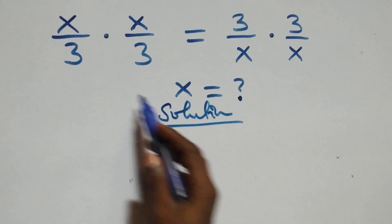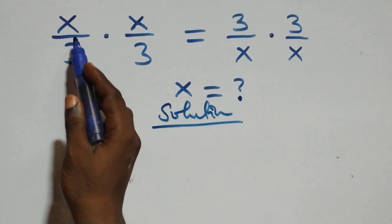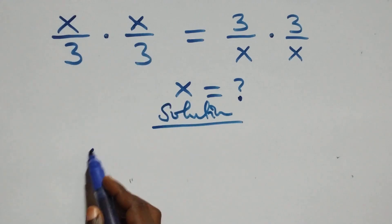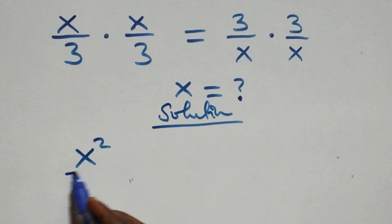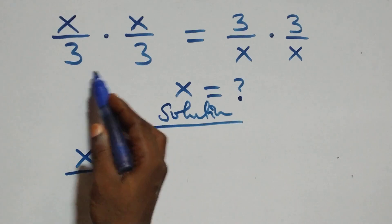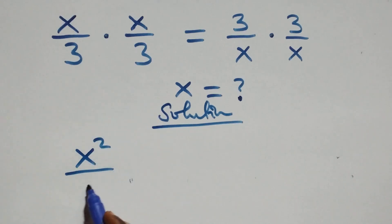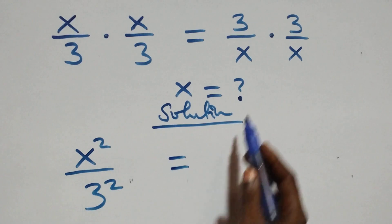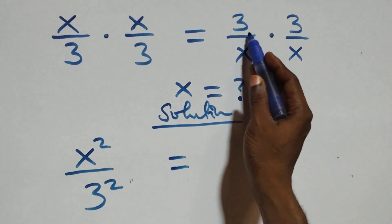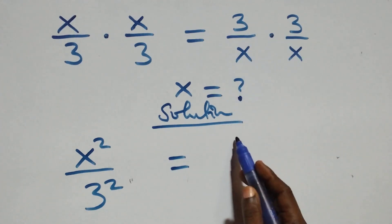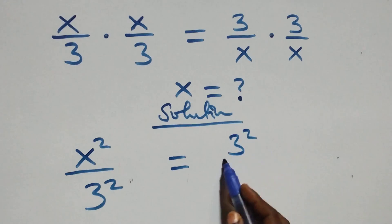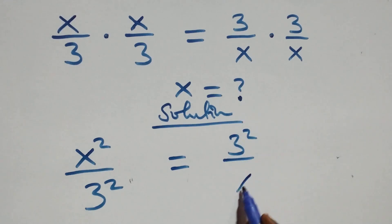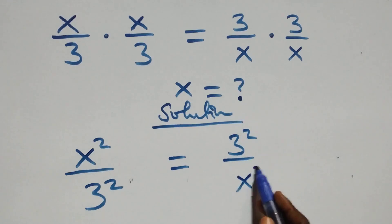From what we have here, we can multiply directly: x times x, we can write that as x squared, then also 3 times 3 as 3 squared equals to this side of 3 times 3 as 3 squared over x times x as x squared.